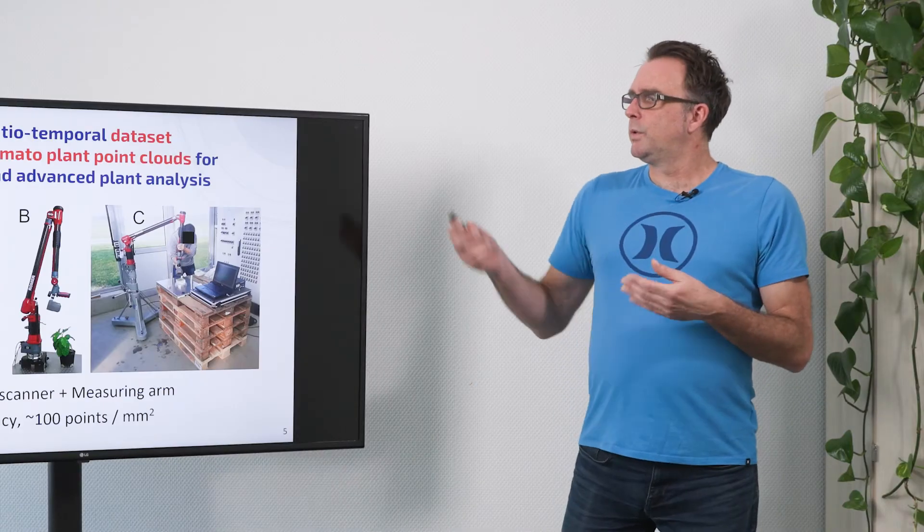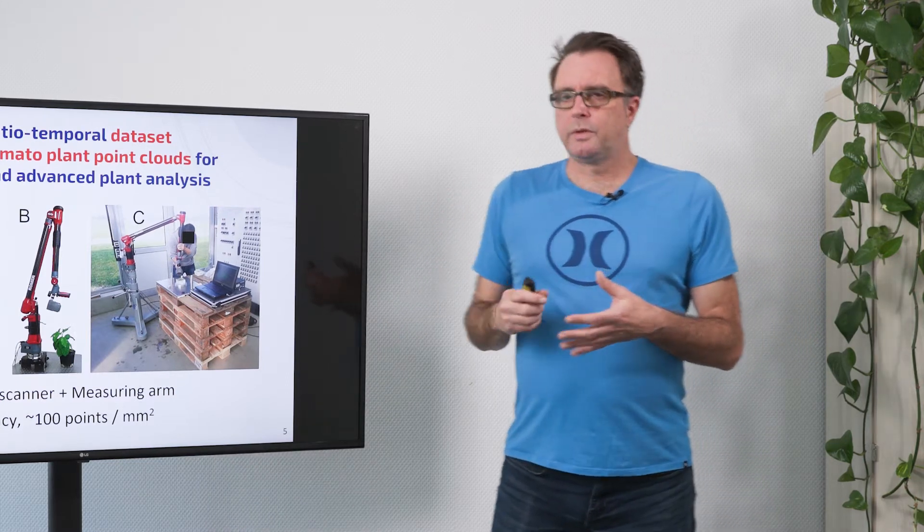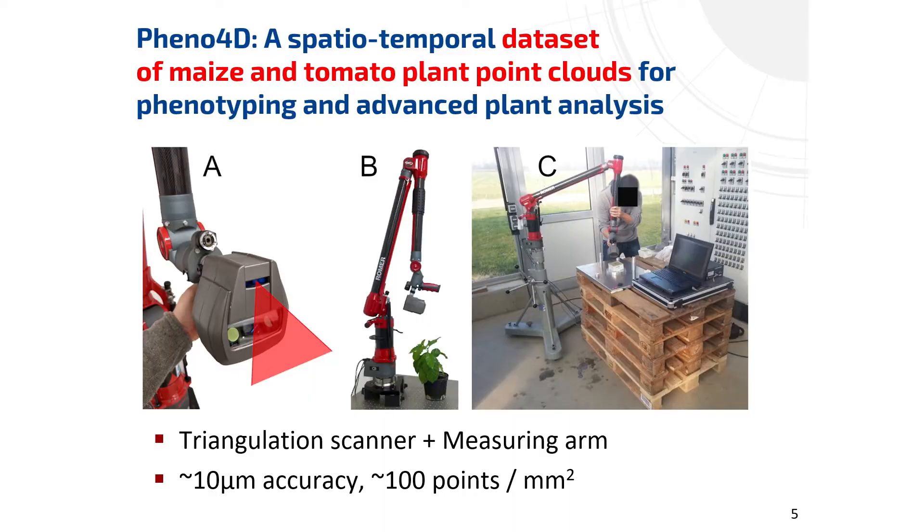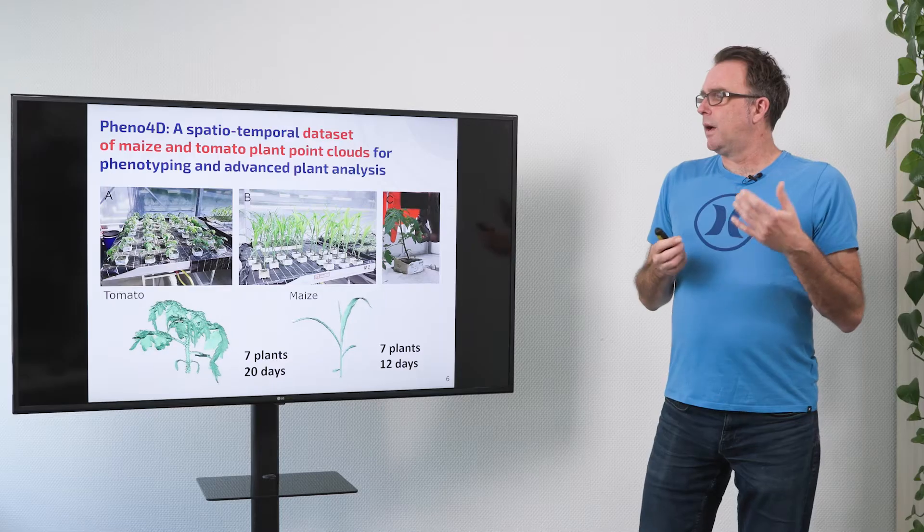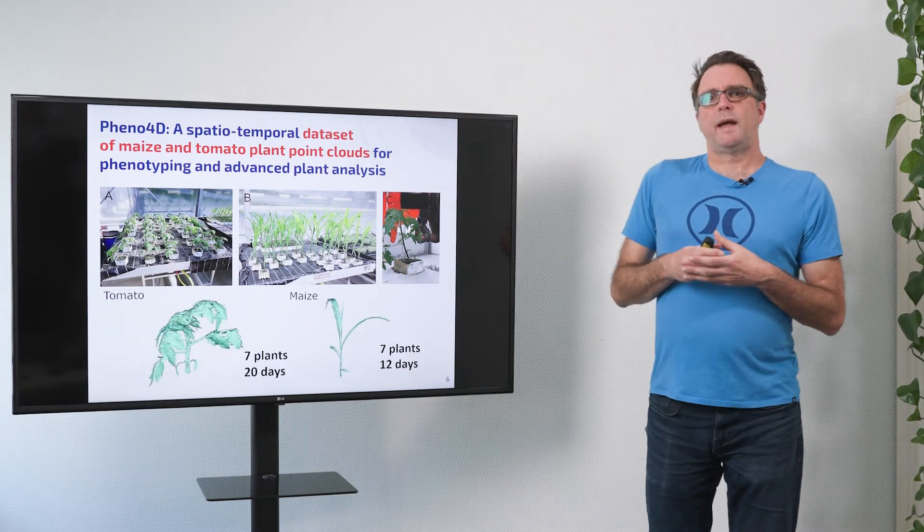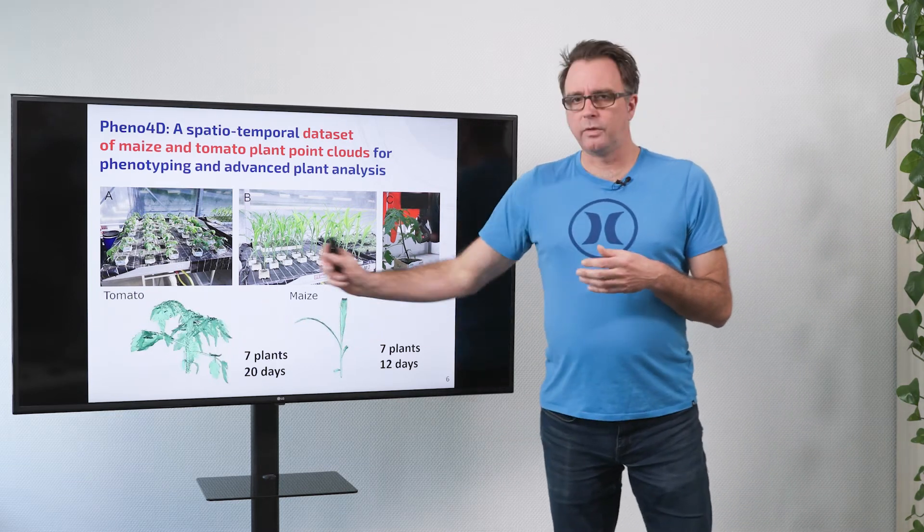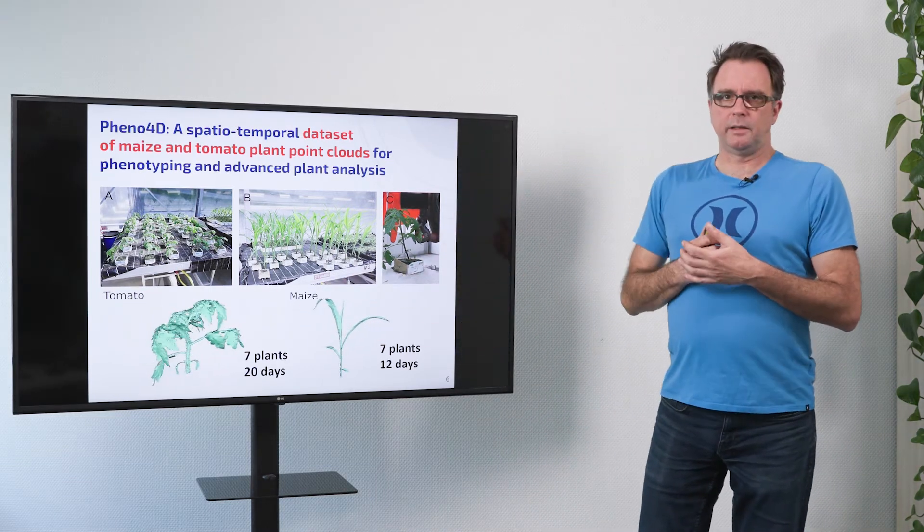So how did we do that? We created the data using a very high precision laser scanner. It's a triangulation based laser scanner with an accuracy of about 10 micrometers which has about 100 points per square millimeter so very dense and very precise and we measured seven tomato plants and seven maize plants and we observed them over multiple days like 20 days for the tomatoes and 12 days for the maize.